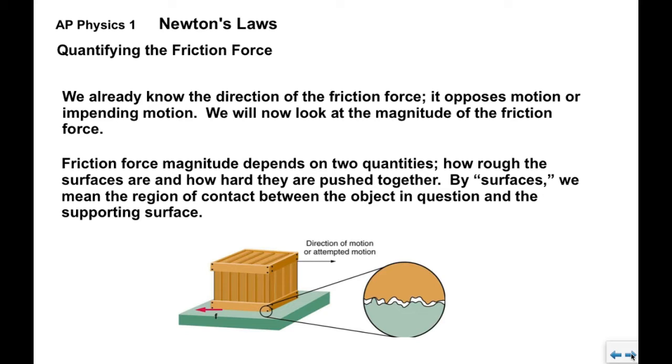When we say surfaces, we mean the region of contact between the object in question and the supporting surface. So we have a picture here of a crate on the floor, and we're going to push this crate to the right. When we look at the point of contact, the region of contact between the crate and the floor, there are microscopic irregularities in each of them. So the yellow up here is the box, and then this is the floor.